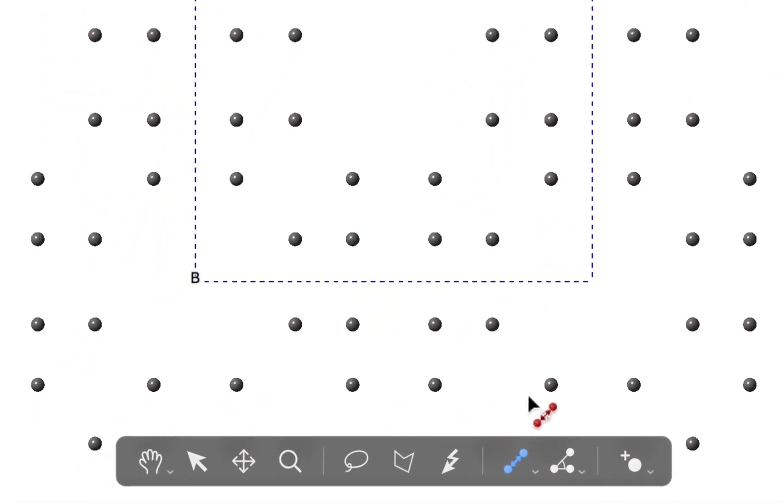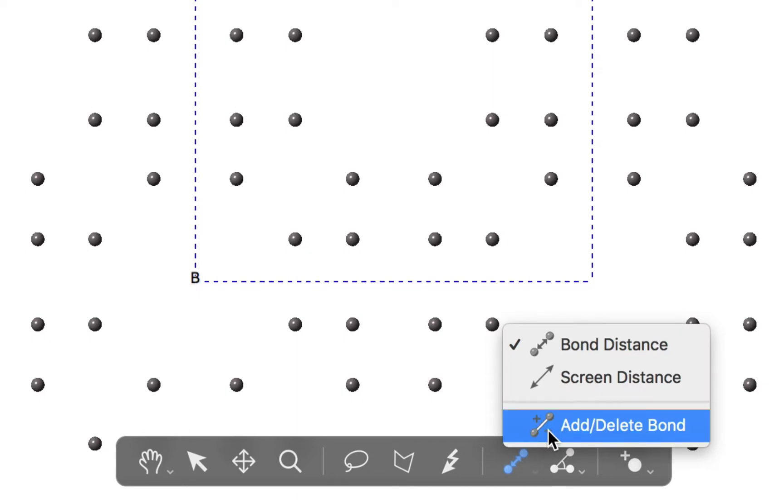I'm going to go down to the tool strip and I'm choosing the add-delete bond tool. That's available on this little popover. You have a choice of bond distance, screen distance, and the add-delete bond tool. They share one position in the tool strip, so you can use the little disclosure triangle down here to display this pop-up menu.